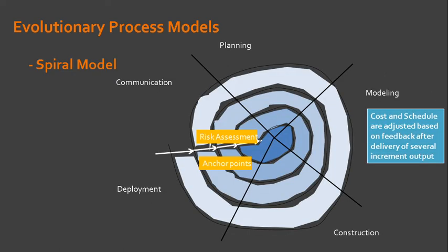Also, anchor points are set. When we say anchor point, it is a combination of work products and also the conditions that are attained along the path of the spiral. You might consider these anchor points as milestones that the project team aims to achieve. Based on the outcomes during these milestones, the cost and schedule are adjusted in preparation for the next cycle.